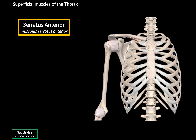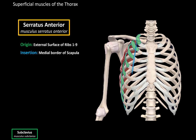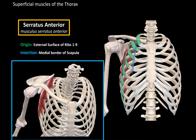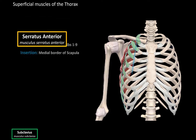Next we have the serratus anterior muscle. These are large muscle fibers located on the lateral aspect of the first to the ninth rib. It originates from the external surface of ribs 1 to 9, and it inserts at the medial border of the scapula back here. Here you see a superior view of it — you can see it goes back and attaches to the medial margin of the scapula. When they contract, they pull the medial margin of the scapula forward, which helps flex the arm.